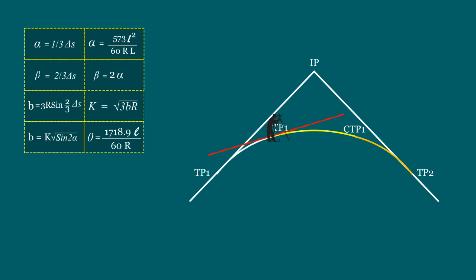Now reset the instrument value at zero. Assume the intermediate circular curve length, then calculate theta1 and measure the distance of ls1 from tangent point one, and fix intermediate point one. For ls2, find theta2, measure the distance from the previous point, and fix point two. Repeat this procedure until we reach the total circular curve length. Check that the value of the last theta must be equal to half of delta c. Again shift the instrument to tangent point two and do the layout of the spiral curve as done previously.